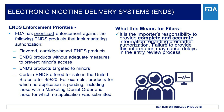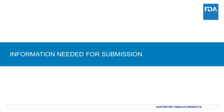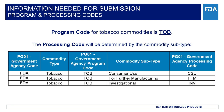ACE is the system through which the trade community reports imports and exports, and the government determines admissibility. Next, we will cover the information needed to submit a tobacco entry to FDA. First, we will identify the program code, which is TOB for tobacco commodities. Next will be the processing code, and this will be determined by the commodity subtype. There are three options for the subtype: Consumer Use (CSU), For Further Manufacturing (FFM), and Investigational (INV). It is important to know what is being imported or offered for import in order to determine the program and subtype processing codes.